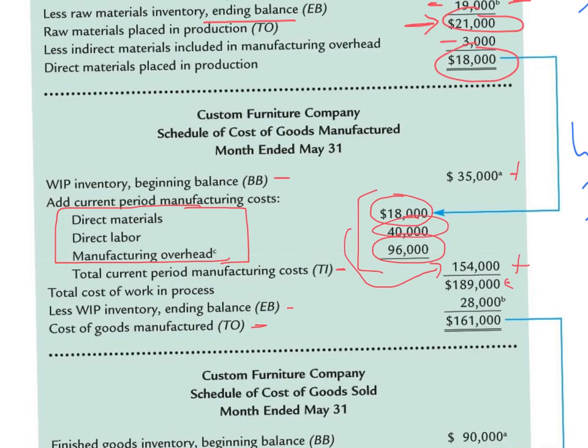Some of that work in process will still be there at the end of the period, and some of those goods will be completed and transferred out. After counting work in process at the end of the period, we determined there was $28,000 worth of goods still in work in process. So $189,000 minus $28,000 gives us $161,000 of products that were completed during the period and transferred out of work in process into finished goods inventory.